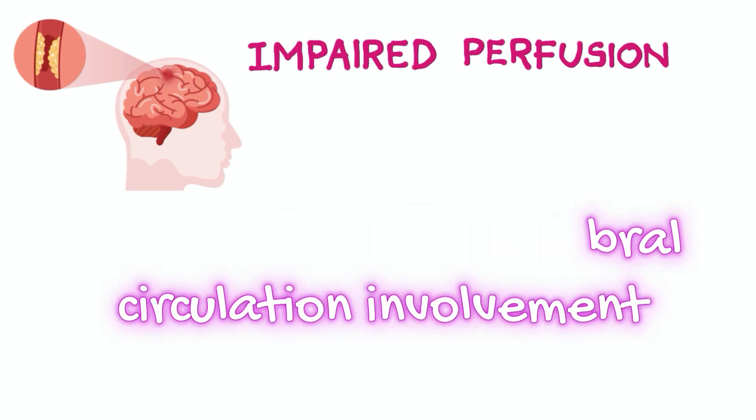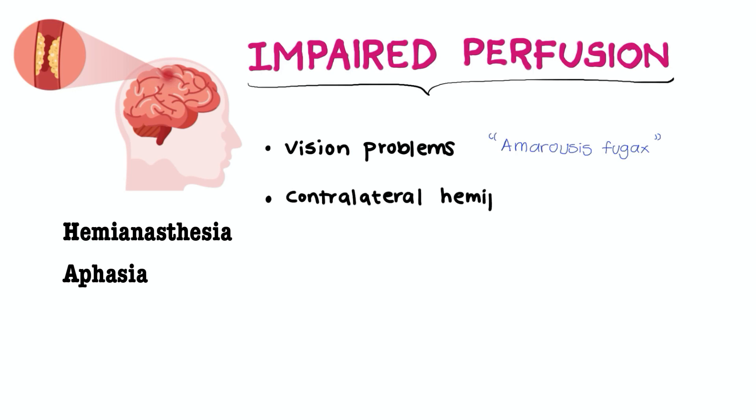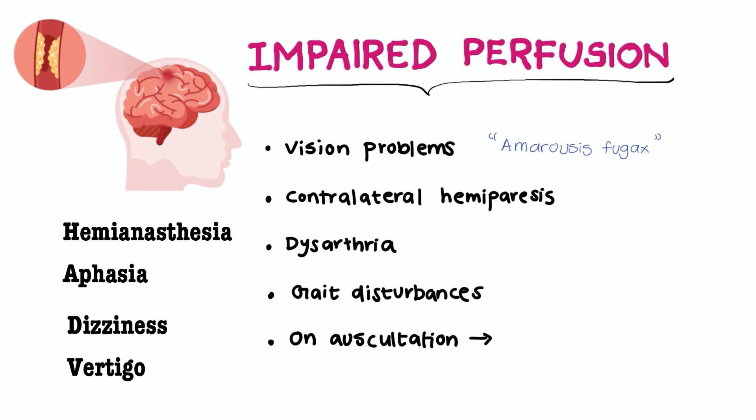These patients will present with vision problems, contralateral hemiparesis, hemianesthesia, aphasia, gait disturbances, dizziness and vertigo. If you auscultate you can hear a carotid bruit.